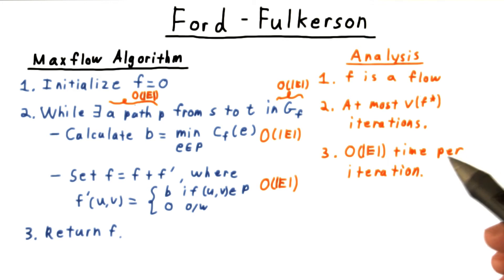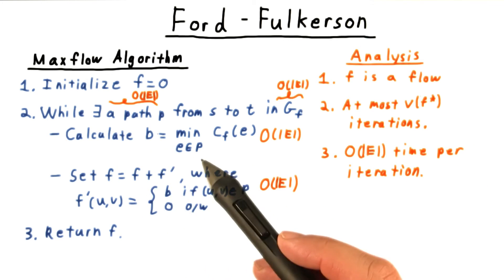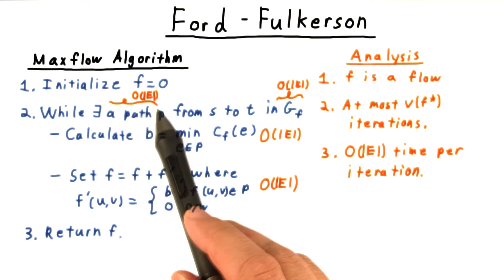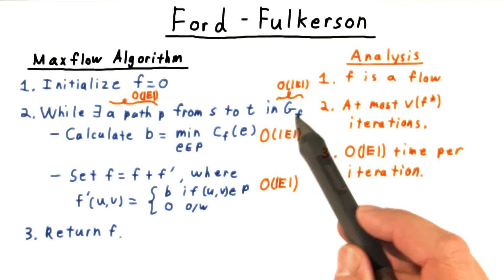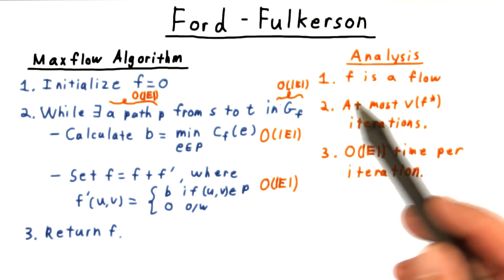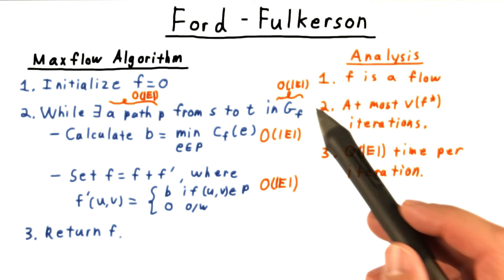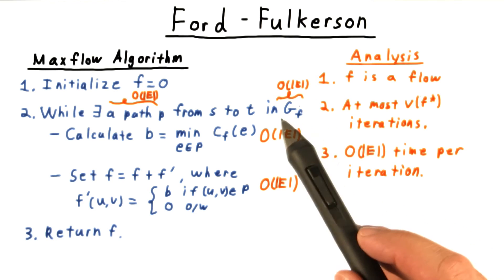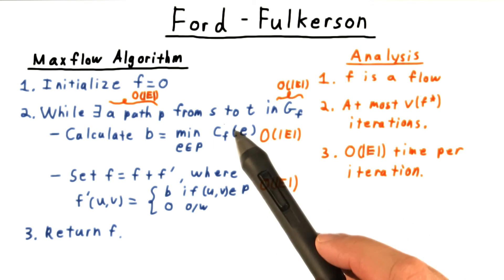How much time does it spend per iteration? Finding a path can be done with breadth-first search or depth-first search in time proportional to the number of edges. Constructing the residual graph itself takes time proportional to the number of edges. And the number of edges in the residual graph is at most twice the number of edges in the original graph, since we only possibly created those reverse edges.